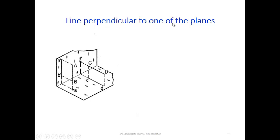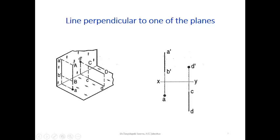Line perpendicular to one of the planes: this line is perpendicular to the horizontal plane, and this line is perpendicular to the vertical plane. When perpendicular to the horizontal plane, the front view shows a true length as a straight line but the top view is seen as a dot — a point. Conversely, the top view is a straight line when the line is perpendicular to the vertical plane, and the front view becomes a point.